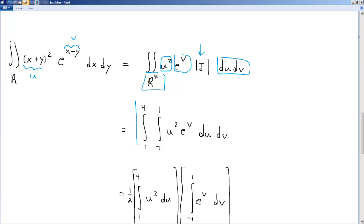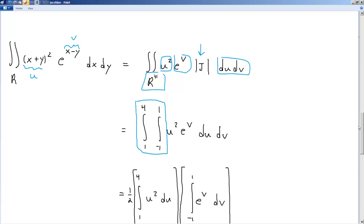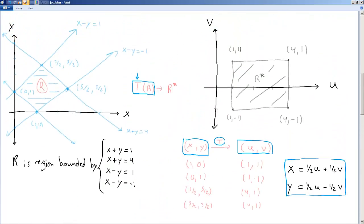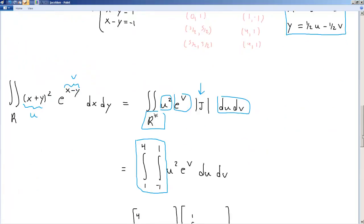And again, if you're wondering where I got these bounds from, have a look at this picture up here, and you can see on the u-axis, we've got from 1 to 4, and on the v-axis we've got from negative 1 to positive 1, okay?